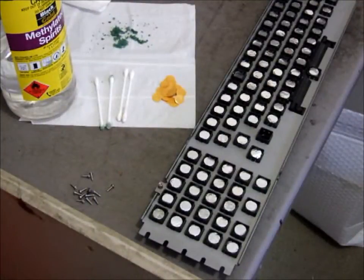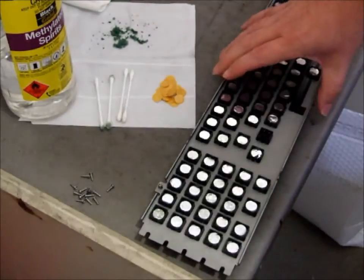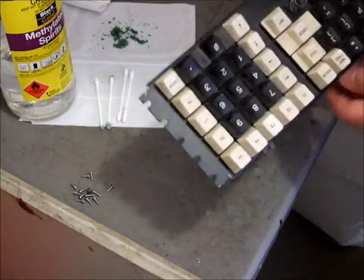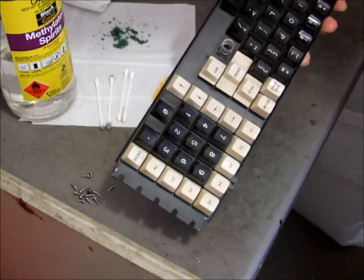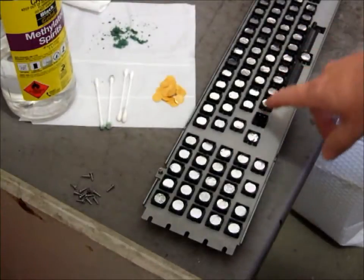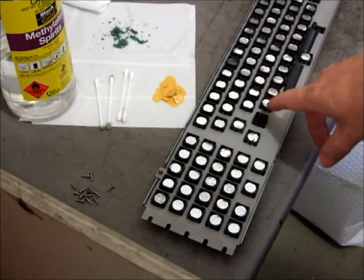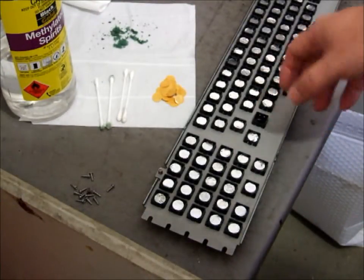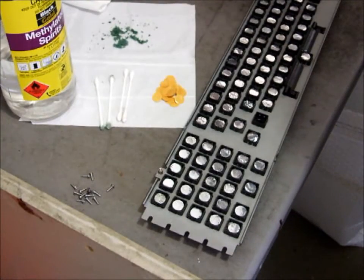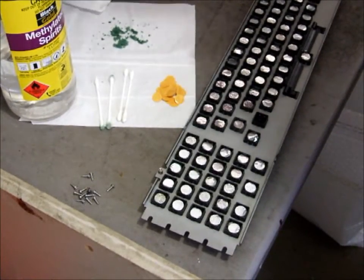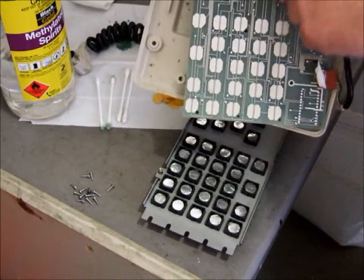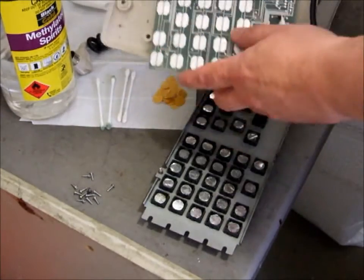Okay, so we have the TRS-80 model 16B keyboard apart. Once it's been removed from the enclosure we've got the keyboard there, and we can see all the aluminum pads here which are needed to make contact with the circuit board so that the keyboard works.